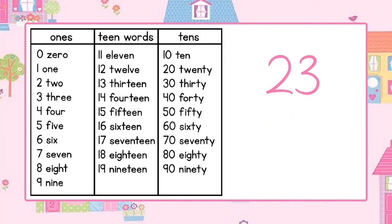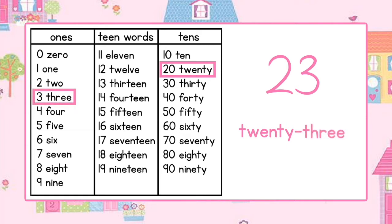Here we have the number 23. Using the chart we first look for the word twenty. Once we find it we may write the word twenty. Next we use the chart to find the word three. Now that we found it we may write the word three. This is the word twenty-three.